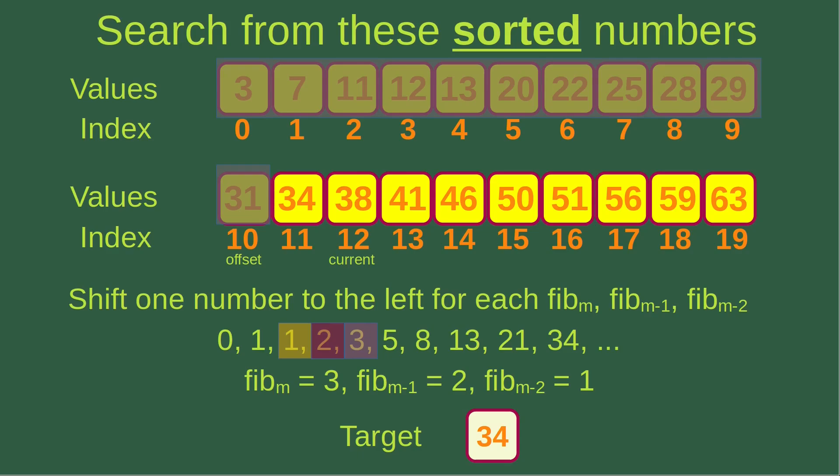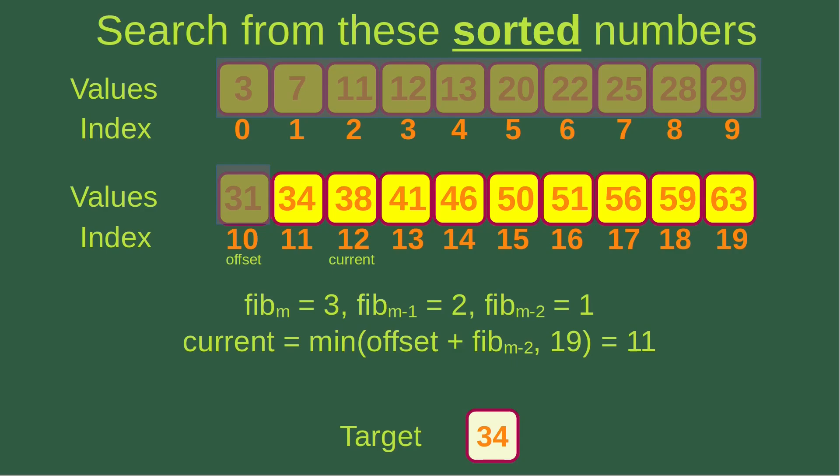I go to the next iteration, shifting one number to the left. Now Fibonacci M is 3, Fibonacci M-1 is 2, and Fibonacci M-2 is 1. Offset is 10 and Fibonacci M-2 is 1, so the sum is 11. Comparing 11 and 19 gives the smaller value 11, so the current index becomes 11.